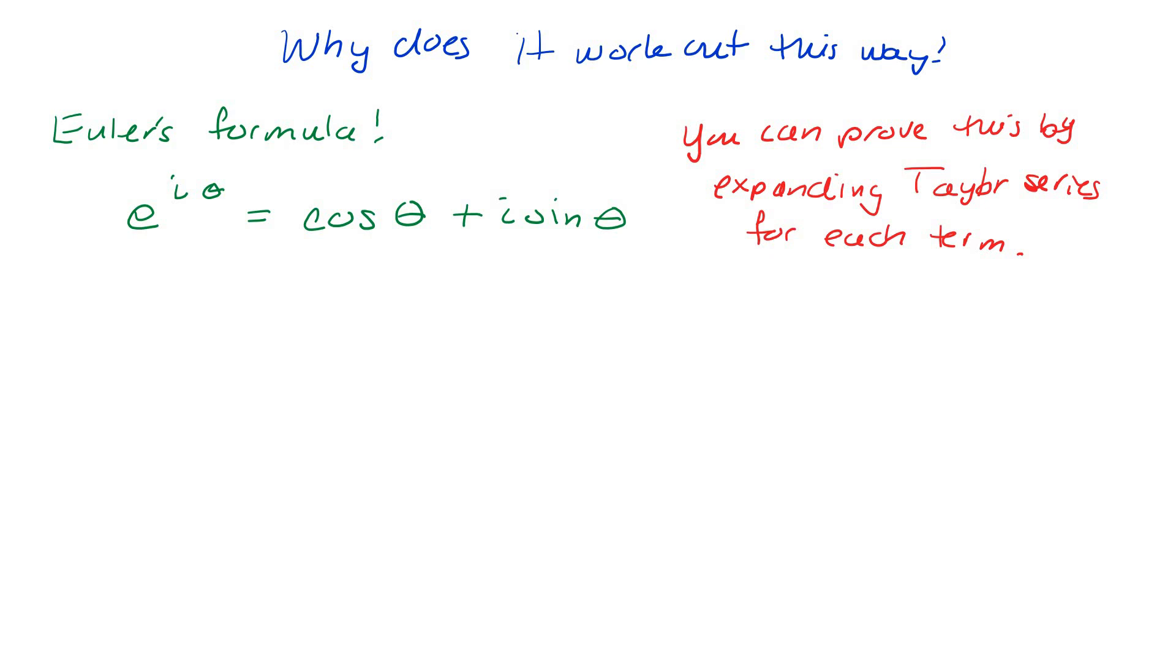So you can prove this by expanding the Taylor series for each term. e to the x is 1 plus x plus x squared plus x divided by 2 factorial, x cubed divided by 3 factorial. If something's in my head and I memorized it like that, that must be important because I've seen it again.